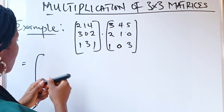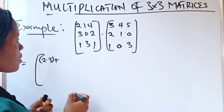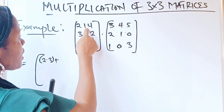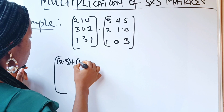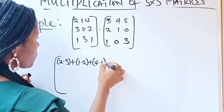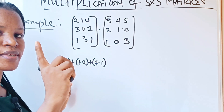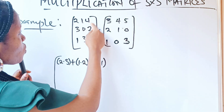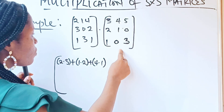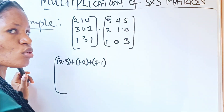So we are going to do 2 times 3, plus 1 times 2, plus 4 times 1. Notice that I'm adding everything because we are forming one single number. When this first row multiplies the first column, the first row also multiplies the second column to form the second number, and also multiplies the third column to form the third number.